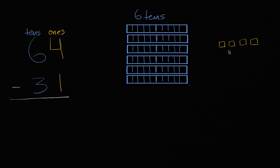And then we have four ones. Well, this is four ones right over here. Four ones. So this is 64, six tens, four ones. Altogether, I have 64 boxes.